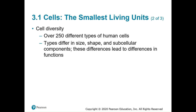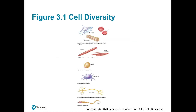We have a lot of different types of cells in terms of size, shape, and components. There are three main components that every type of cell has, but besides those three main components, these cells are really diverse. This slide shows just a few examples of the different cells.